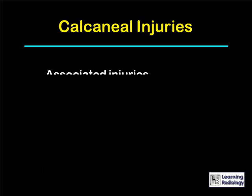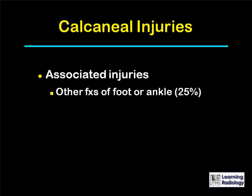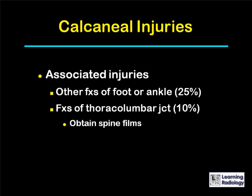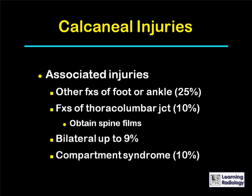There are injuries associated with calcaneal fractures. There may be other fractures of the foot or ankle in up to a quarter of cases. You should always obtain a view of the thoracolumbar junction because there may be fractures there in up to 10% of patients. Calcaneal fractures are bilateral in up to 9% of patients, and in about 10% of patients a compartment syndrome develops, which can lead to soft tissue or nerve injury.